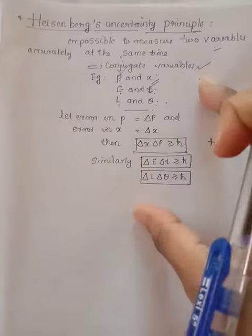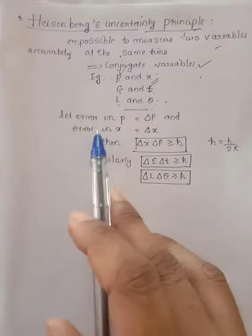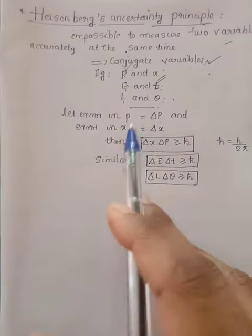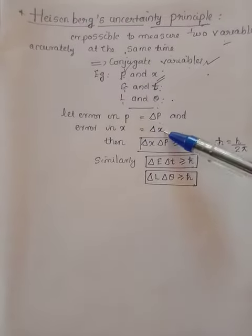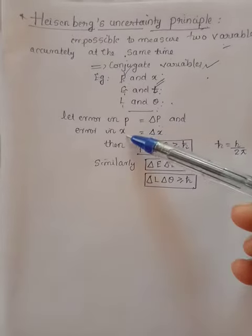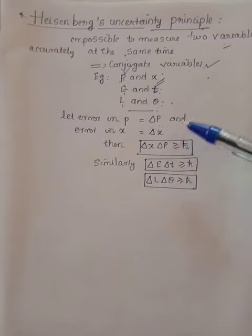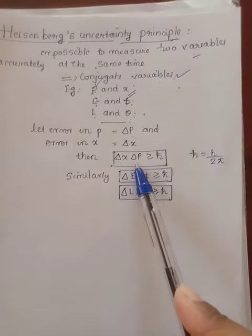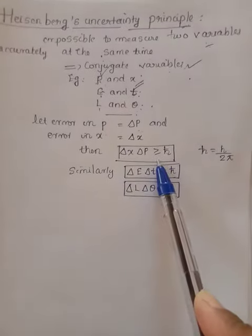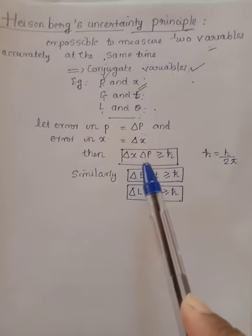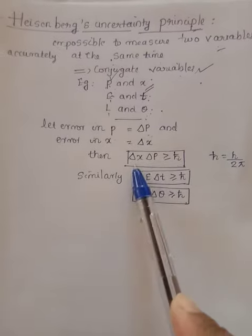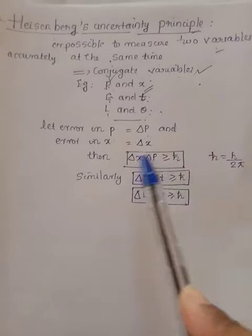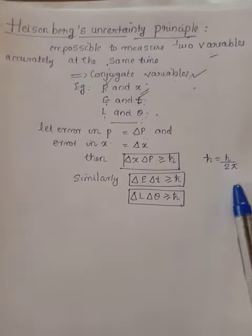That is the concept of Heisenberg's uncertainty principle. Now, let the error in position be delta p, and the error in momentum be delta x. According to this principle, the product of these two errors will always be greater than or equal to h-bar — that is, delta x multiplied by delta p is always greater than or equal to h-bar.